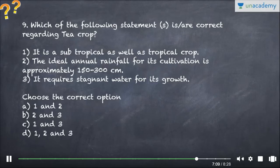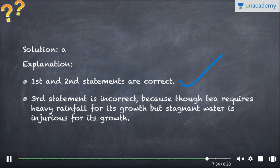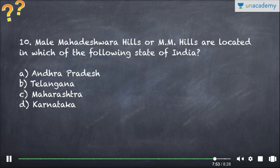Question nine: Which statements are correct regarding tea crop? It is a subtropical as well as tropical crop — correct. The ideal annual rainfall for its cultivation is approximately 150 to 300 centimeters — correct. It requires stagnant water for its growth — incorrect, stagnant water is injurious to tea. Tea requires heavy rainfall but stagnant water damages it. Answer: first and second statements are correct.